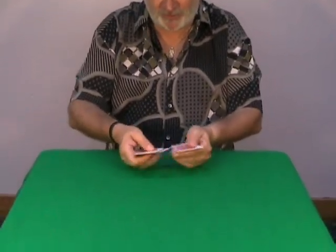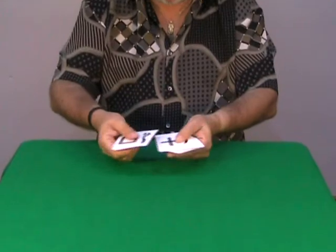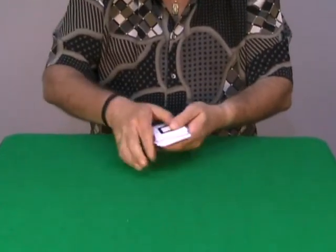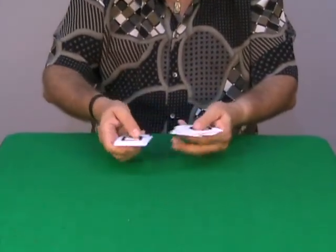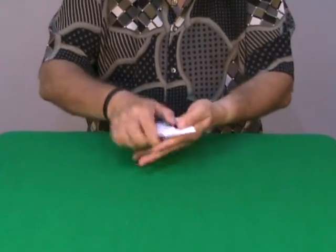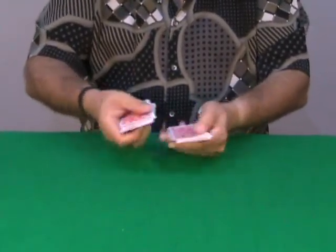You show the deck, you shuffle it, and you, of course, always explain the ESP cards. You have a deck of 25 cards, 5 symbols repeated 5 times, and so on.